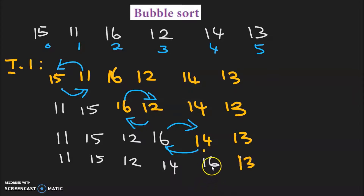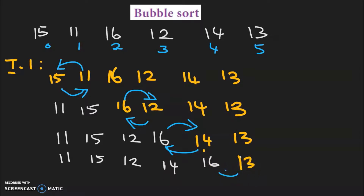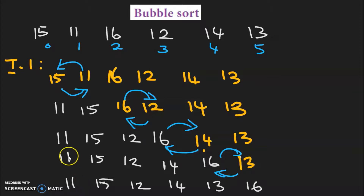Now at the next comparison, we compare the fifth element and sixth element — 16 and 13. There should be an interchange. 13 has to come to the front and 16 has to go to the next position. So if we interchange: 11, 15, 12, 14, and 13 and 16 will be exchanged. This is the end of the first iteration.